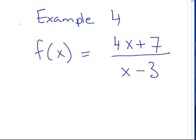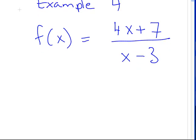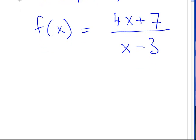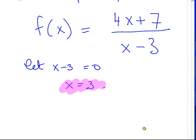Let's finish up on a nice easy one. The denominator is x minus 3. So let x minus 3 equal to 0; x is equal to 3. That's a nice easy one to finish up on. So that's vertical asymptotes covered. Now we'll do the horizontal asymptotes in a minute.